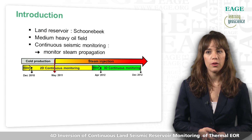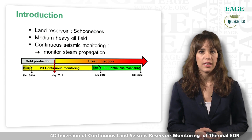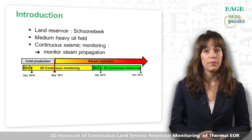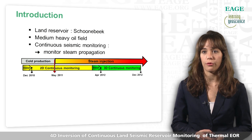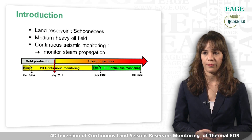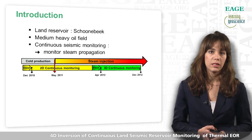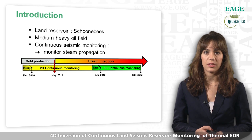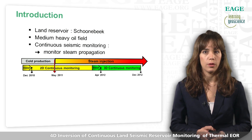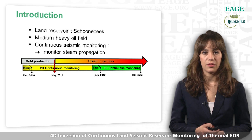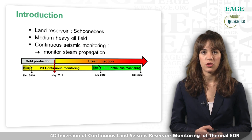The reservoir in question is located in the Netherlands and named Schoonebeek Reservoir. It's a medium-heavy oil field for which oil recovery is greatly improved by steam injection. A continuous seismic monitoring system was installed in 2012 for two years. The aim of this monitoring was to map the steam chest propagation over time.